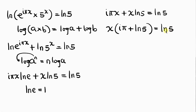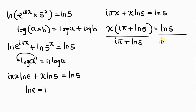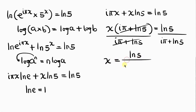Our next step is to divide both sides by the expression inside the parentheses, i pi plus ln 5. Dividing both sides by i pi plus ln 5, that factor cancels on the left, leaving x equal to ln 5 all over i pi plus ln 5. And there you have it.